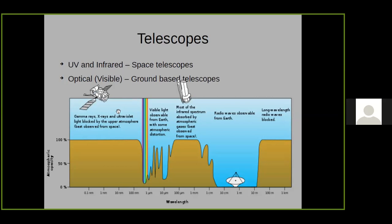Hot objects like massive stars, black holes, and neutron stars can be studied using space telescopes. Visible light from low mass stars can be studied from the ground. However, some infrared is blocked by Earth's atmosphere, requiring space telescopes for infrared too. Radio waves have very long wavelengths and can be detected at ground level — that's why we have radio telescopes in India, one in Ooty and one in Mumbai.